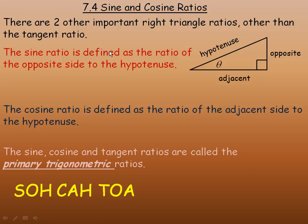The sine ratio is defined as the ratio of the opposite side to the hypotenuse. And we write the sine of an angle, theta in this case, is the ratio of the opposite side to the hypotenuse.